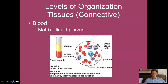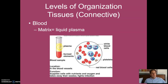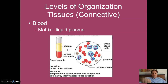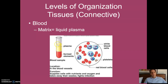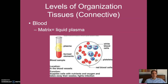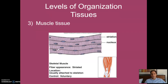Blood is actually a connective tissue — it does bind and connect things. In this case, the matrix is a liquid. If you take blood and put it in a centrifuge that spins it very fast, the cells — red blood cells, white blood cells, and platelets — all pack down to the bottom, and you have a liquid on top called plasma. That plasma is the matrix for this connective tissue. It fits our definition of cells embedded in a matrix.